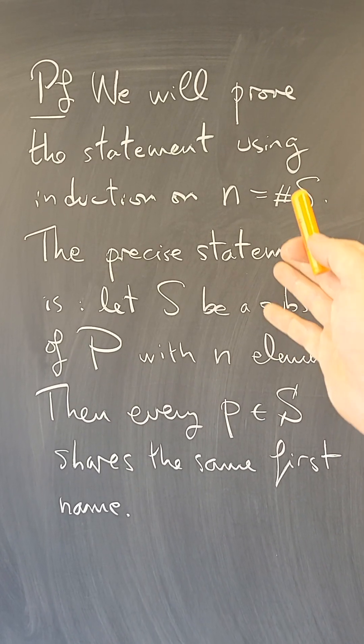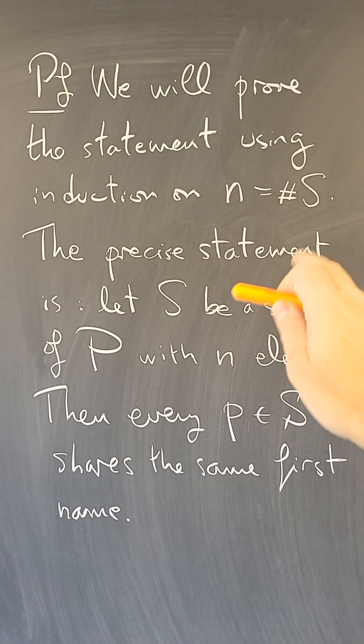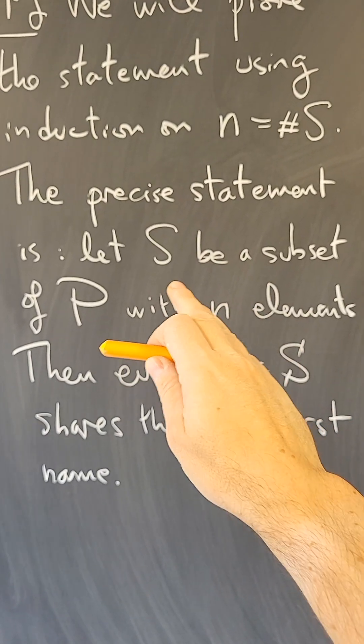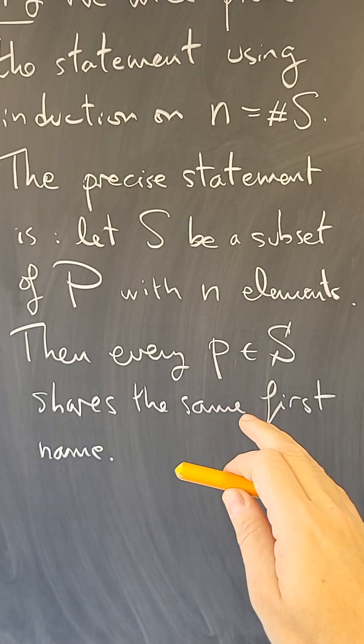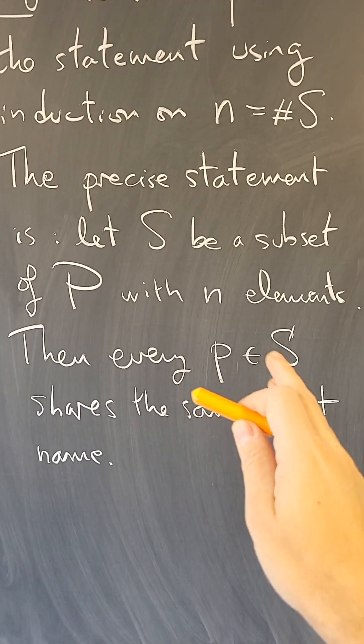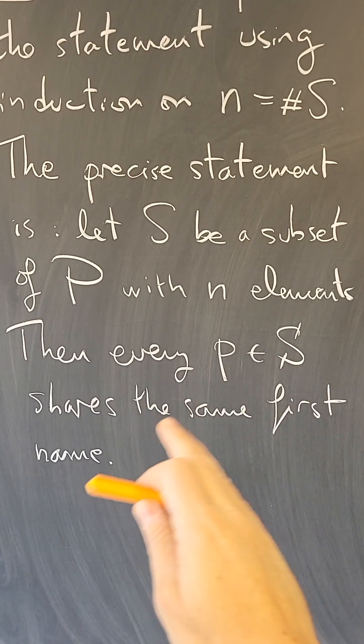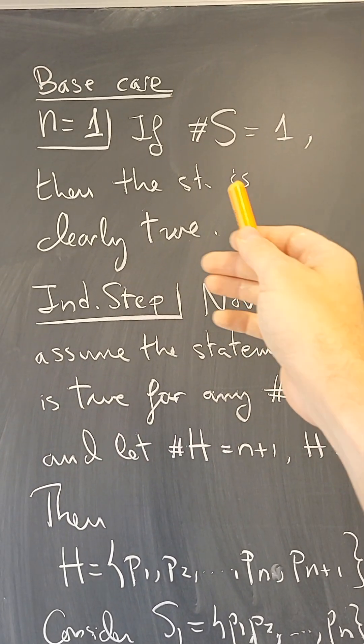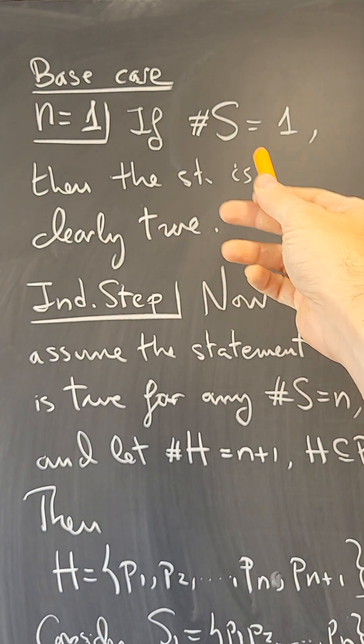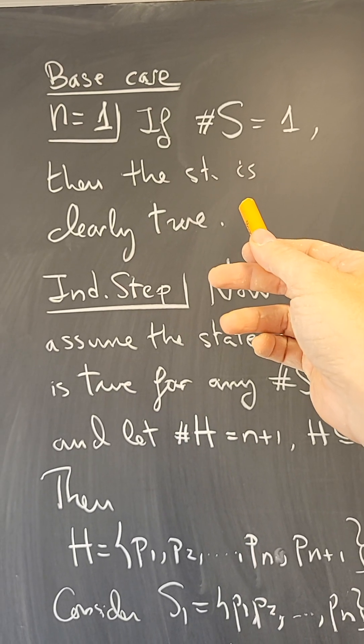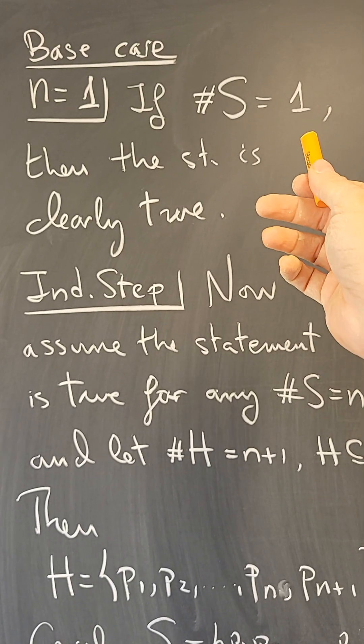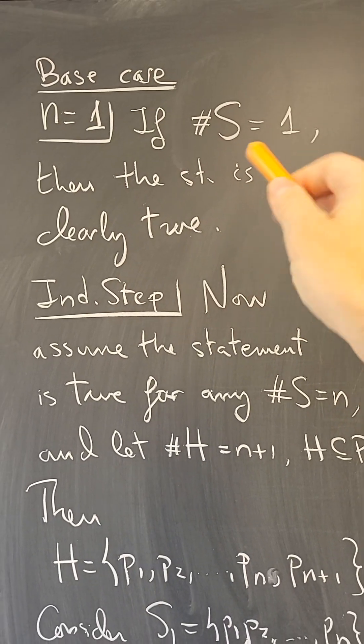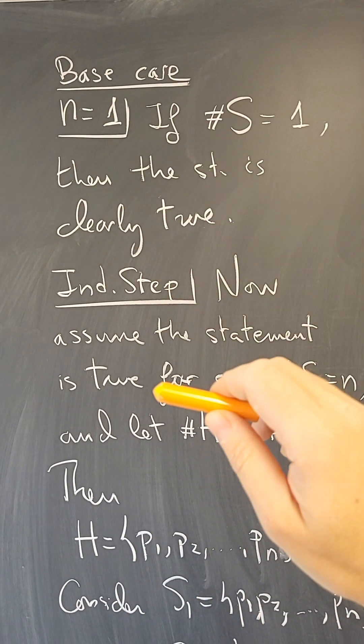We're going to prove the statement using induction on the number of elements in the set S. The precise statement is going to be, let S be a subset of P with N elements. Then every person in that subset shares the same first name. So let's use induction. The base case is N equals 1. If there is exactly one person in the subset, then clearly the statement is correct because everyone in the subset shares the same name. There is only one person. So the base case is true.